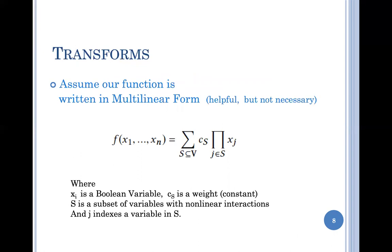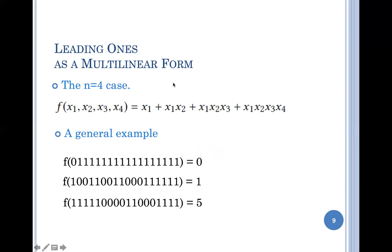We assume our function is written in multi-linear form. Multi-linear form means I have a set of variables x_i or x_j; I multiply together some subset of variables, yielding zero or one, then weight the result by a constant c_S, where S is the subset of variables all multiplied together. I sum over all subsets to construct my poly-linear form function.